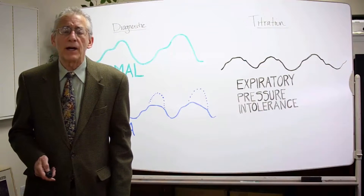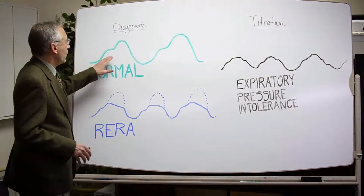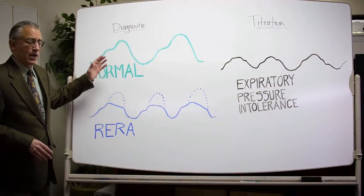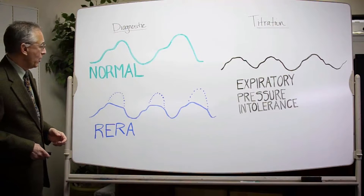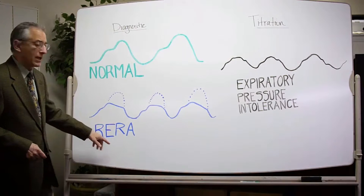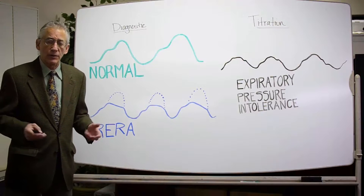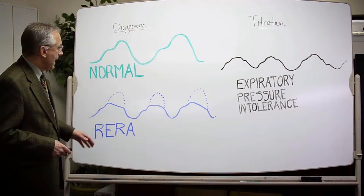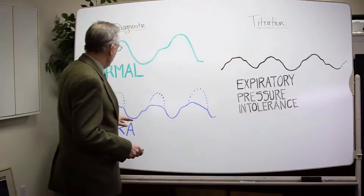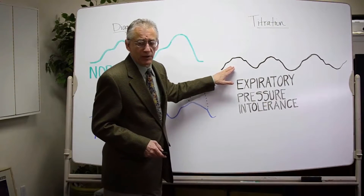When we think about trying to treat these individuals, we normally recognize that the airflow curve should be rounded on inspiration and expiration as far as our target would go. But we often run into difficulty dealing with respiratory effort-related arousals or flow limitations — the two discrete terms for upper airway resistance. What happens is we conduct a titration trying to eliminate the RERAs, but instead we end up with expiratory pressure intolerance.